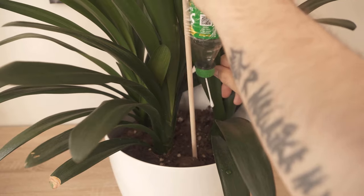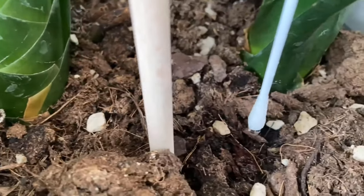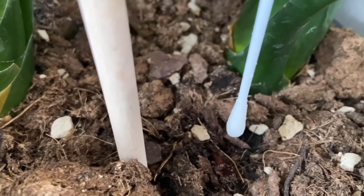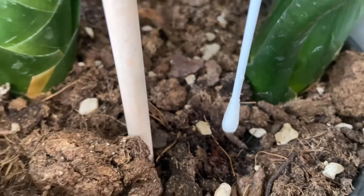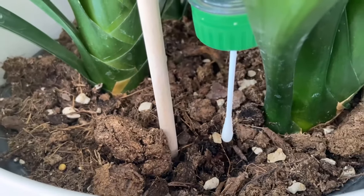The other side of the cotton swab, which is still in the bottle, now closes the hole a little bit, but there is still some water coming through, which slowly drips over the cotton swab into the soil.